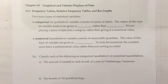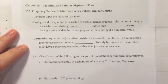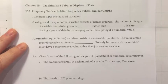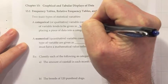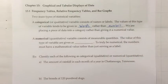When we look at statistical topics, one of the things we're always going to consider is whether we have categorical or numerical data. A categorical variable, also referred to as qualitative in some books, is a variable that consists of names or labels. The values of this type of variable tend to be given in words rather than numbers, placing a piece of data into a category rather than giving it a numerical value.